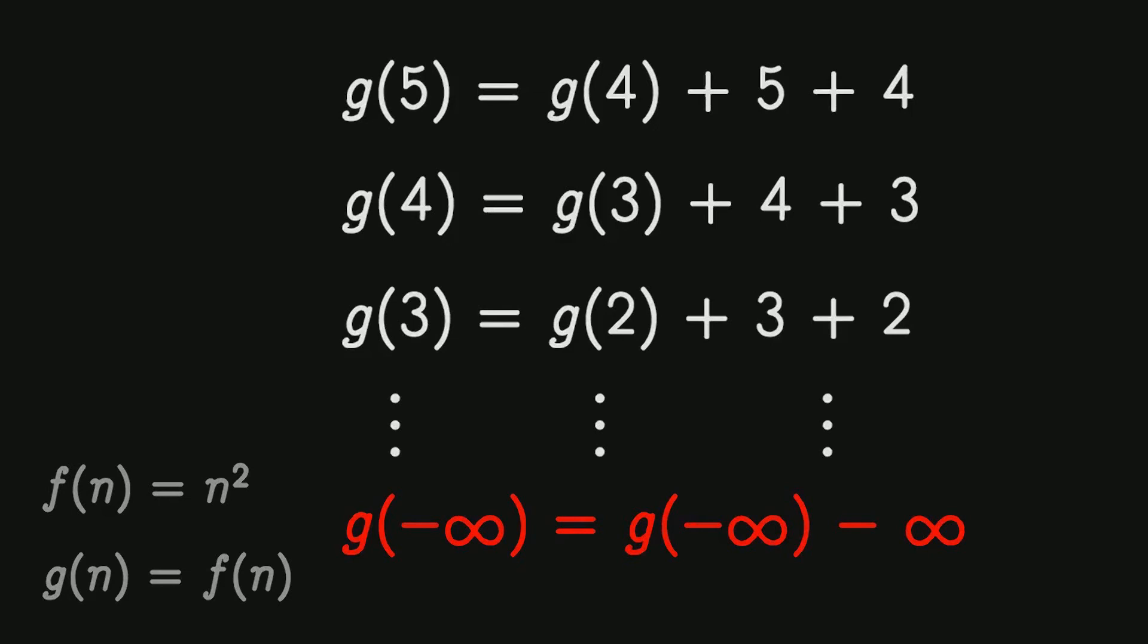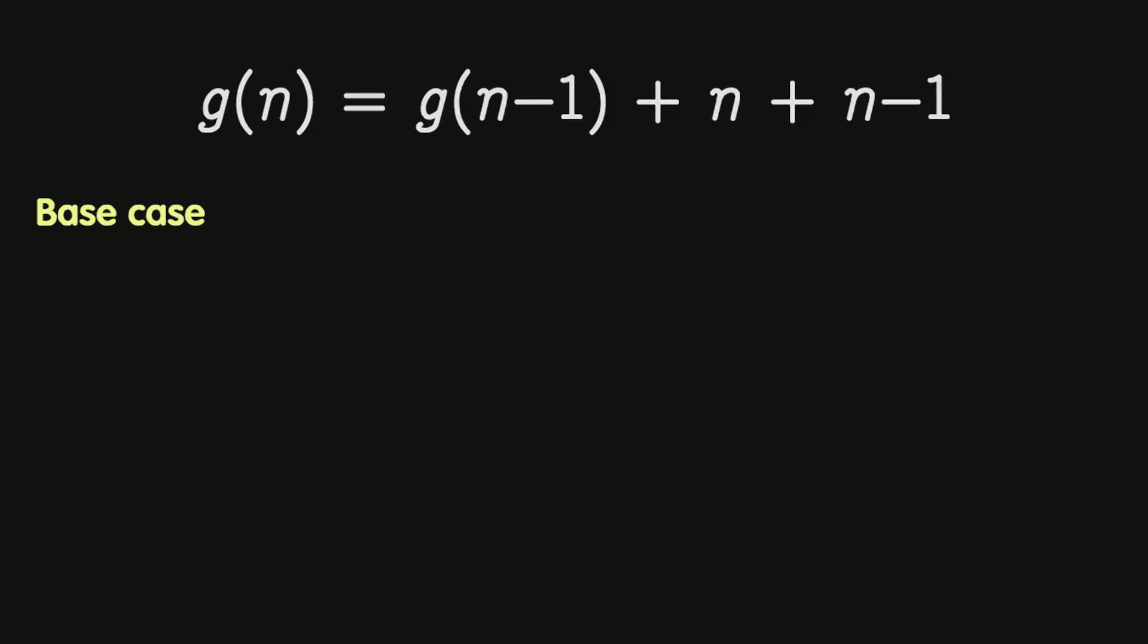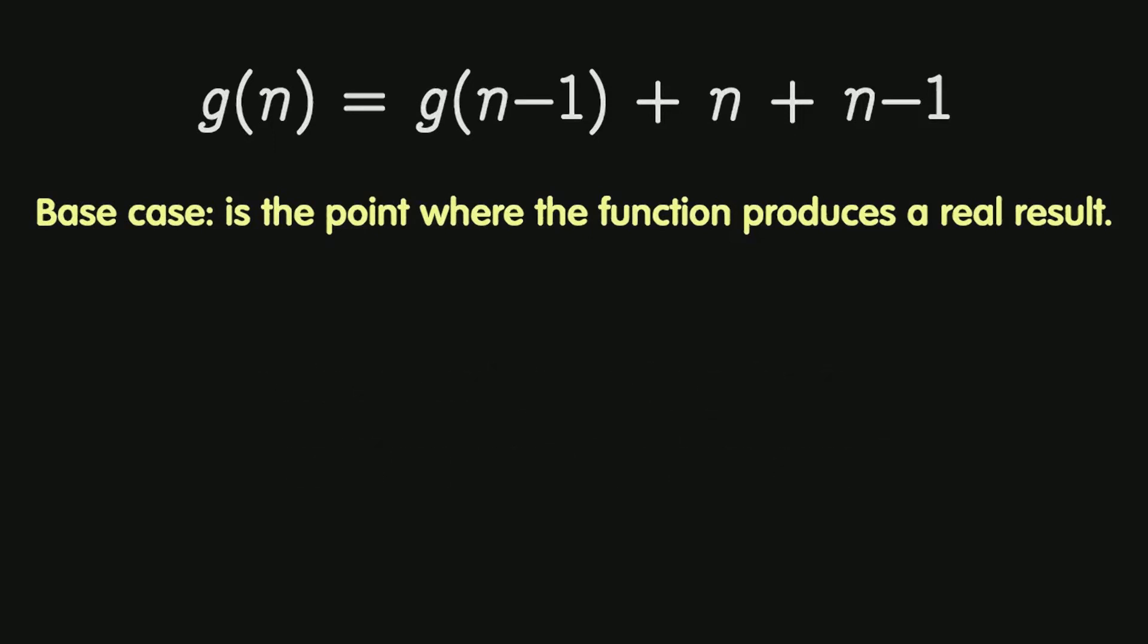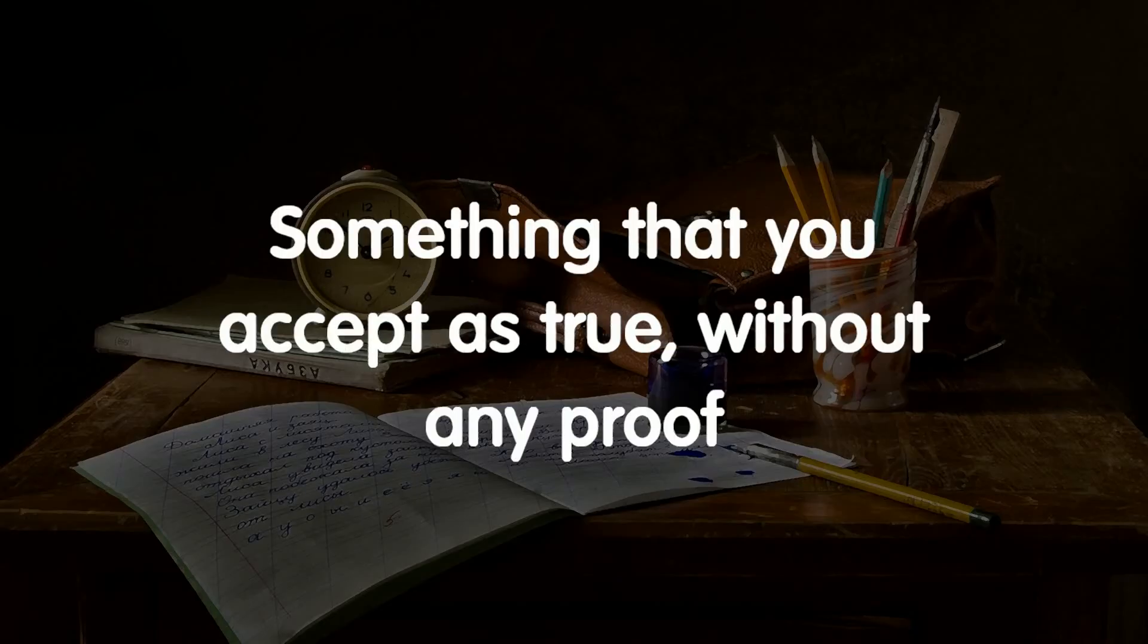And the only way to break this chain is by setting the so-called base case. And the base case is the point where the function produces a real result. And this is a very important hint about recursive functions. We are not going to get a real result until we reach the base case. We can think of the base case like an assumption, something that you accept as true without any proof.